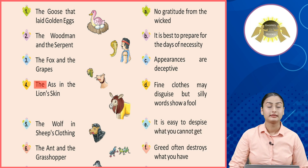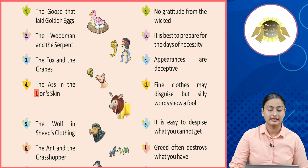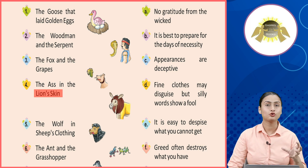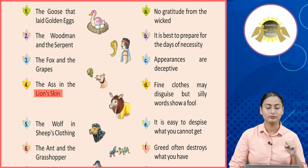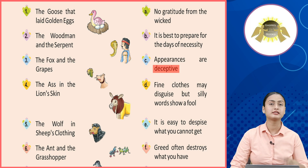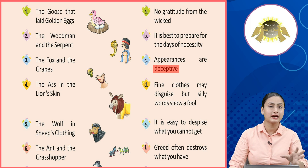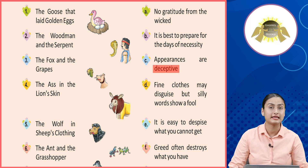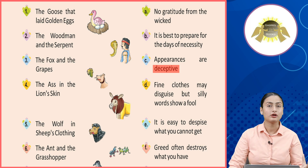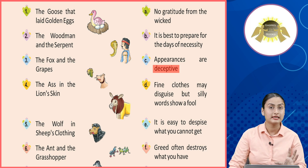Number four: The Ass in the Lion's Skin. Is story se hume seekhne ko milta hai: Appearances are deceptive. Yani ki kisi ko dekh kar hume pata nahi lag sakta ki kaunsa insaan kis prakar ka hai.